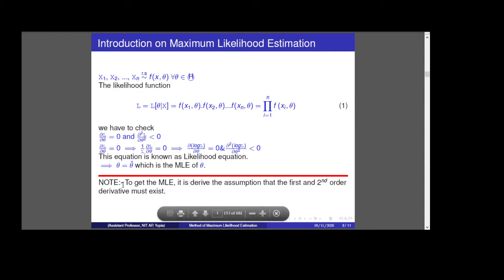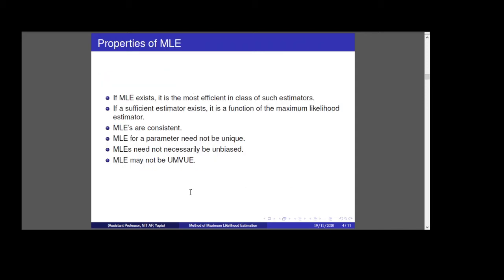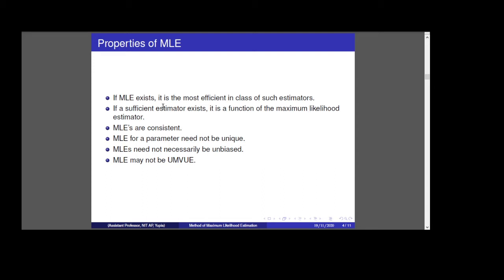As a note, to get the MLE it is assumed that the first and second order derivatives must exist — these are the conditions for MLE. Now for the properties of MLE: if MLE exists, it is the most efficient in its class of estimators. If a sufficient estimator exists, it is a function of the maximum likelihood estimator. MLEs are consistent. The MLE for a parameter need not be unique. MLE need not necessarily be unbiased. MLE may not be a minimum variance unbiased estimator. Efficiency, sufficiency, consistency, and unbiasedness are the desired properties of an estimator, but here we focus only on the maximum likelihood estimator.